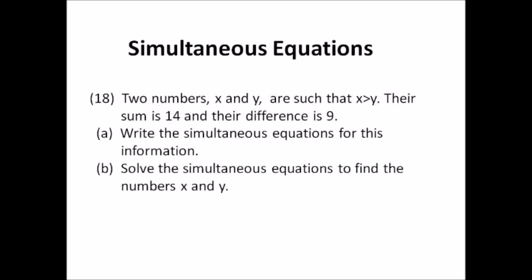Number eighteen: simultaneous equations. Two numbers x and y are such that x is greater than y, their sum is 14 and their difference is 9. a) Write the simultaneous equations. Their sum is 14 gives one equation; their difference is 9 gives another. Then b) solve the simultaneous equations to find x and y. Once you solve for x, substitute into one equation to find y.